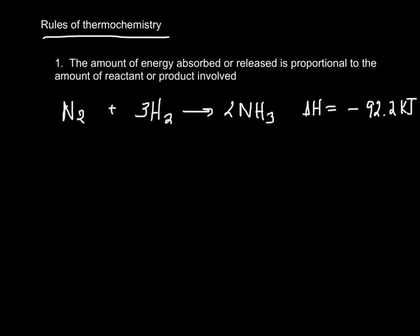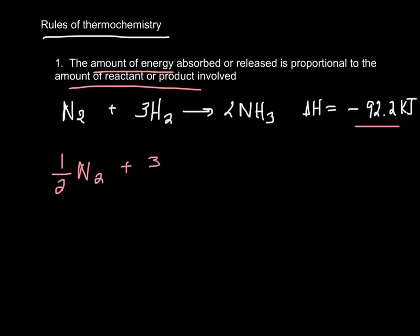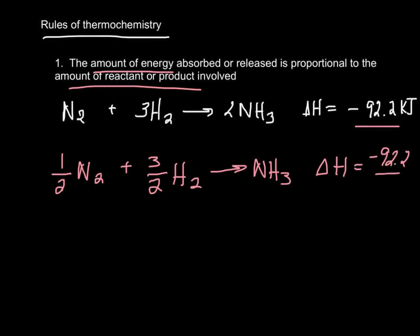The first law says that the amount of energy absorbed or released is proportional to the amount of reactant or product involved. Basically, if I were to use more nitrogen, it would release more heat. Or if I take this equation and write it as ½N₂ + ³⁄₂H₂ → NH₃, the heat released, instead of being -92.2, is -92.2 divided by 2. If I cut the equation in half, the heat gets cut in half. That's the first law.